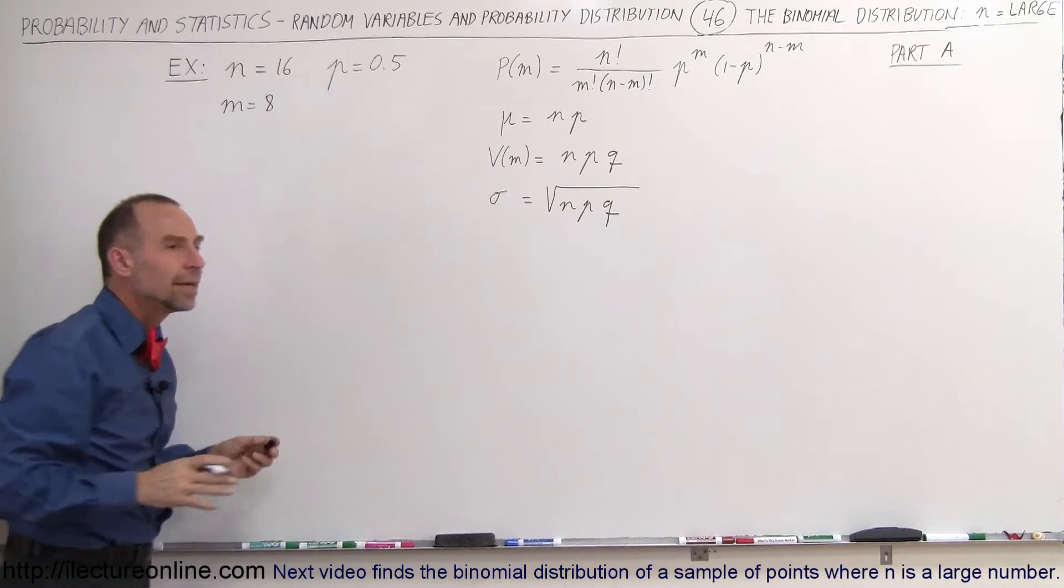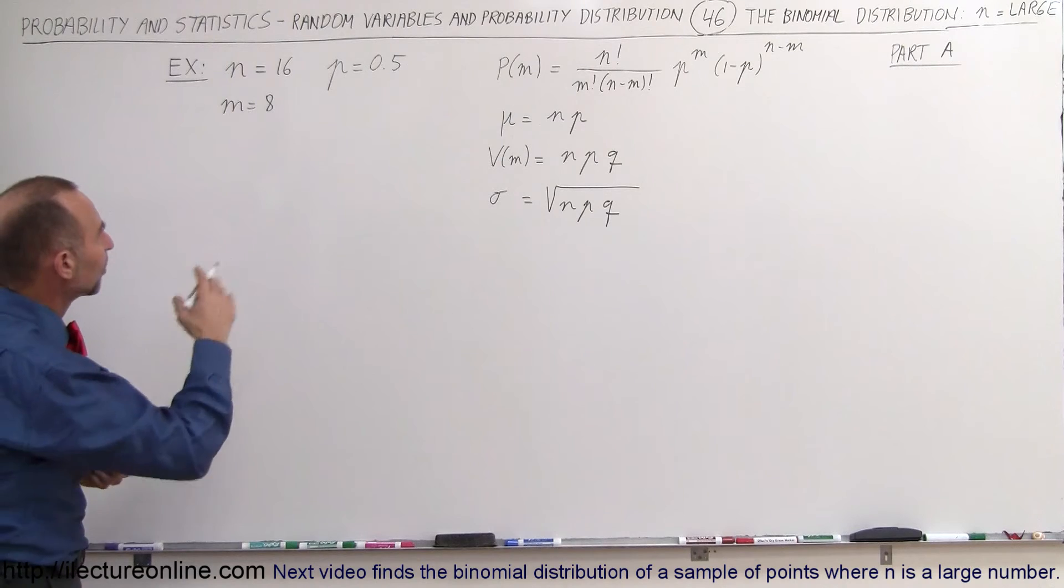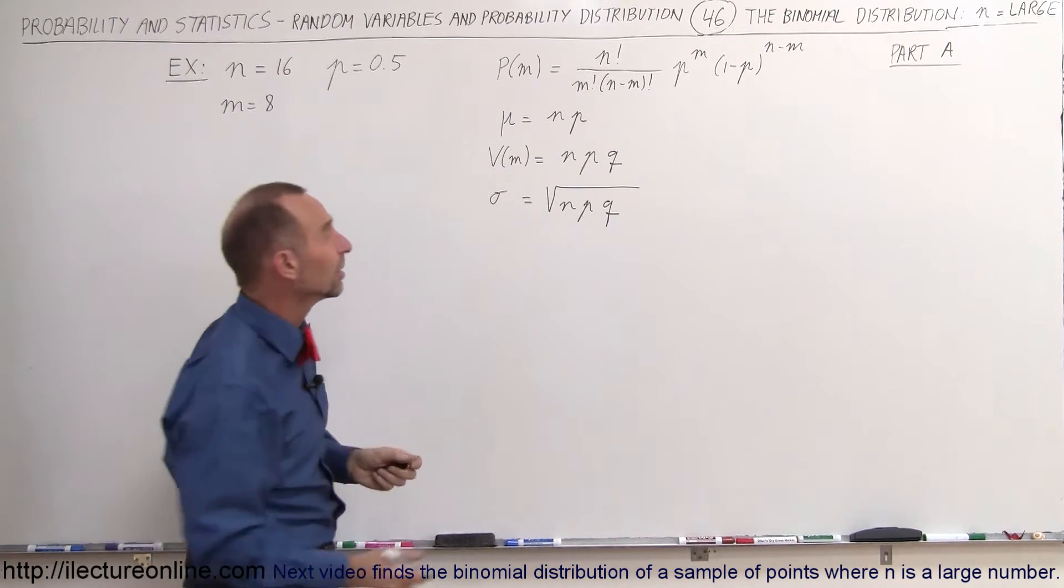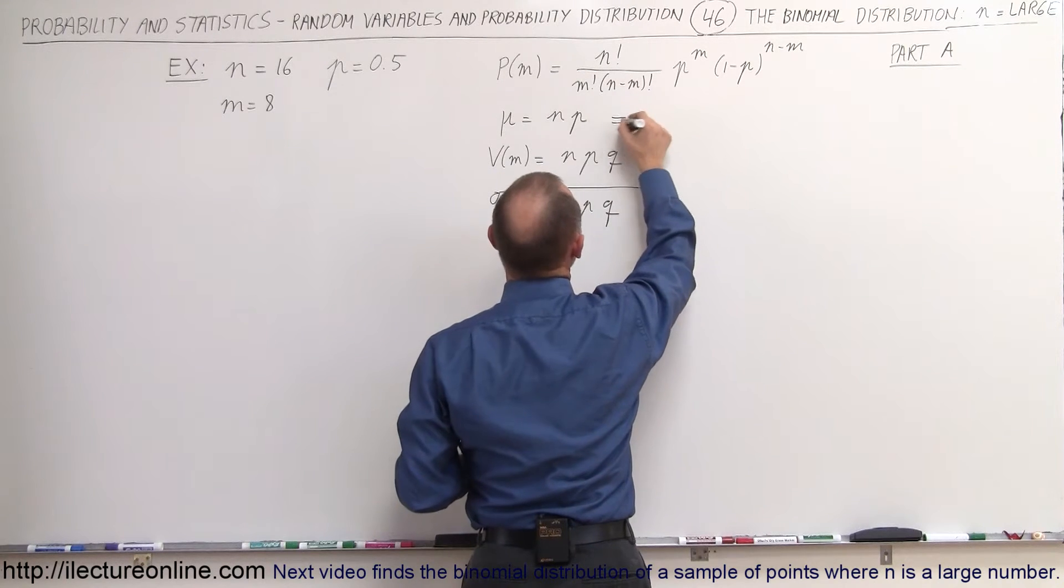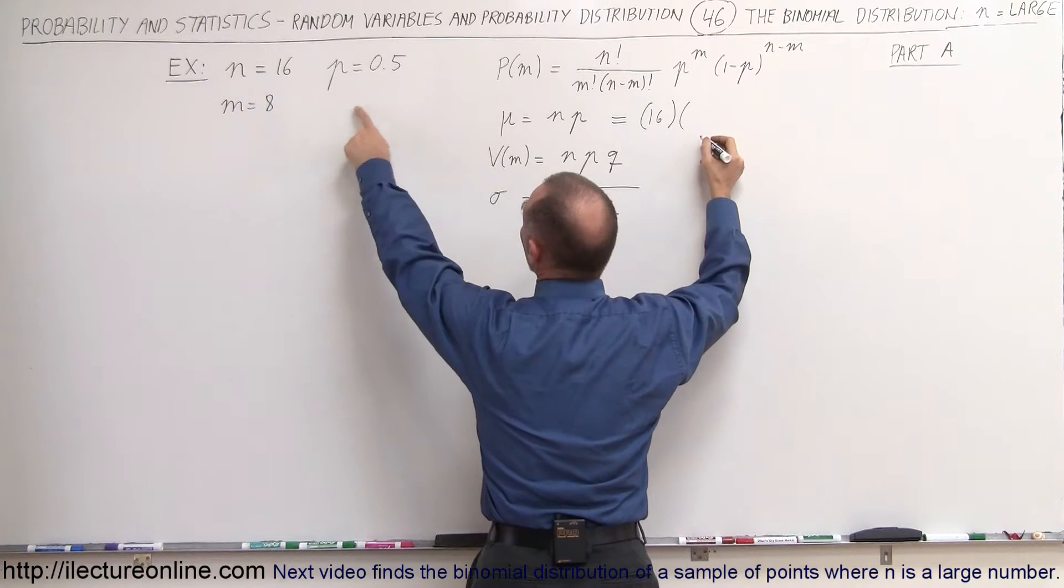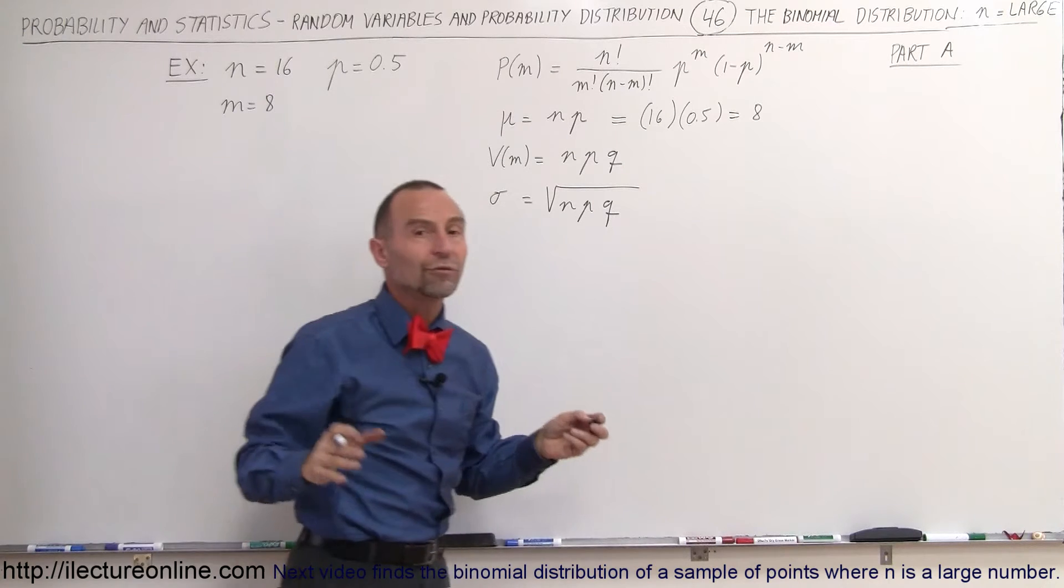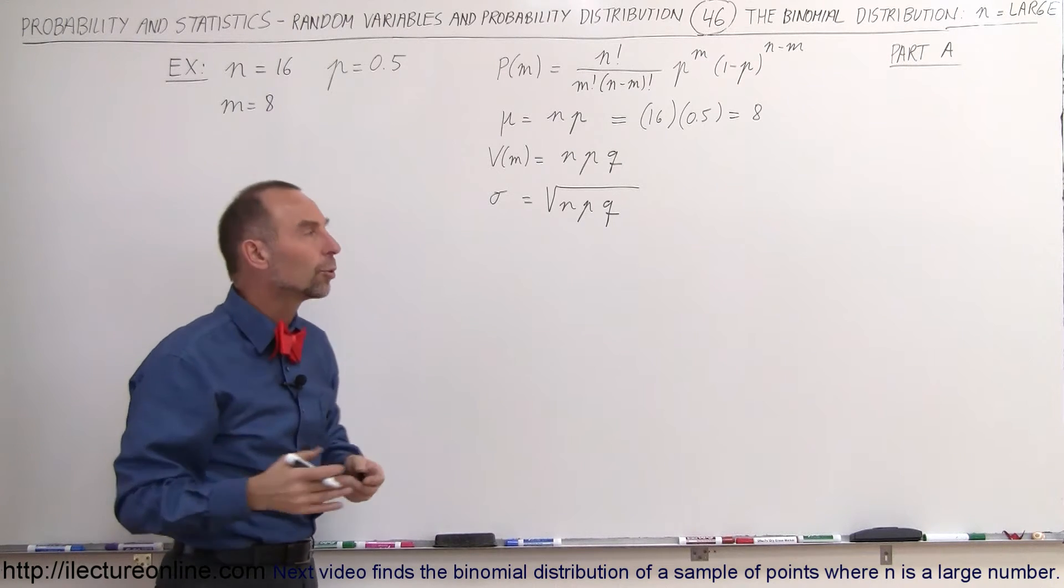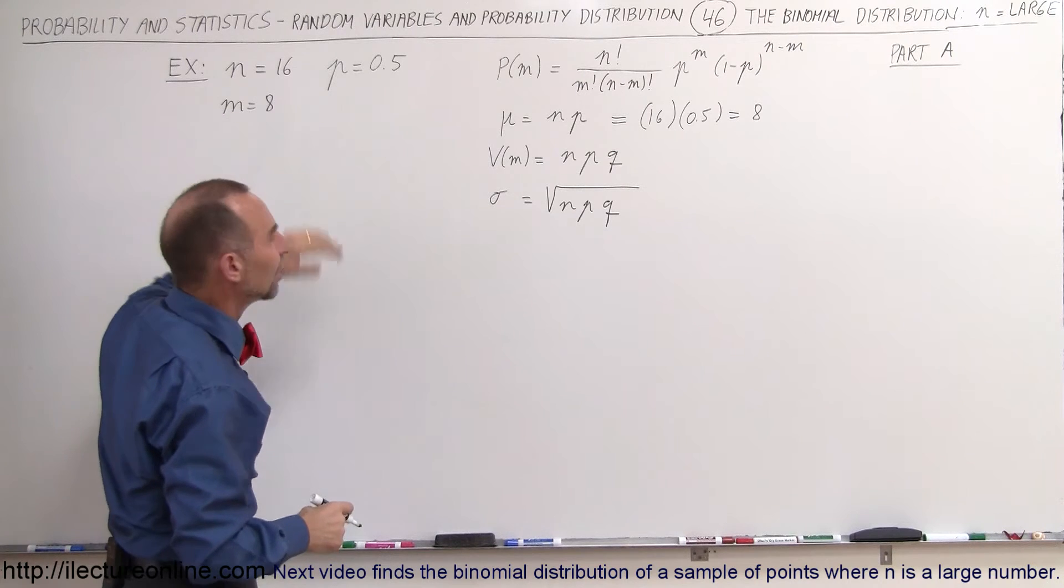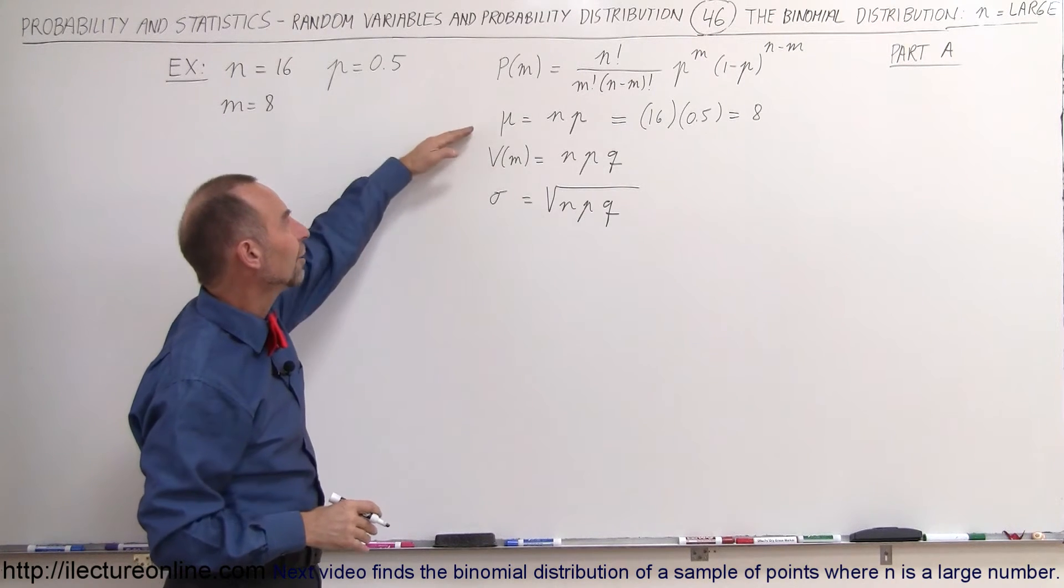So we're going to find the probability with 8 successes. Let's plug that into our equation. First of all, let's calculate these three numbers right here because they're very easy to calculate. The expected value is n, which is 16, times the probability of success, which is 0.5, and that equals 8. So the expected value, or the value that is most probable to occur, is m equals 8. We're going to go ahead and let m equal 8 being 8 successes, which is the most prominent or most likely event to occur.